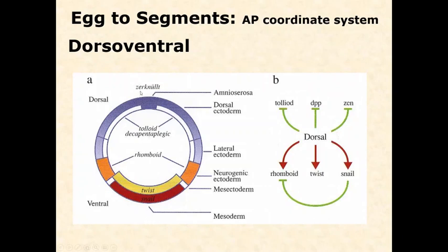For dorsal-to-ventral patterning, we'd have a whole new set of genes — Snail, Twist, Rhomboid, Tolloid, Decapentaplegic, and others. You don't need to memorize those — all I want you to know is that the same principles are applied: a hierarchy starting with maternal genes and then downstream steps. If we were to look at the proximal-to-distal axis being patterned as appendages grow out, we would see yet another set of genes. Realize we have three axes, all patterned by different hierarchies of genes.